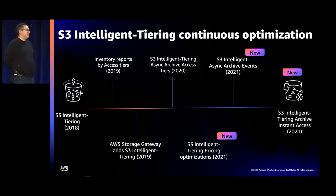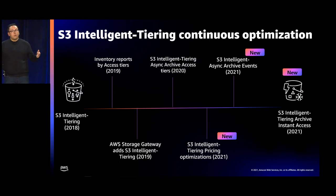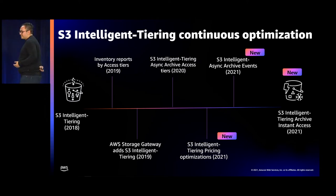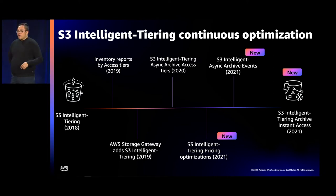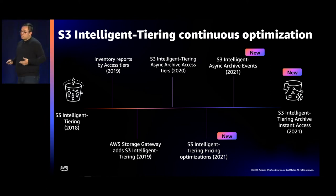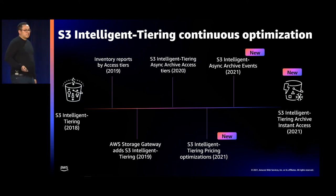To give a few examples: shortly after launching in 2018, we added support for Intelligent Tiering access tiers within inventory reports, so customers could know which objects were sitting in the infrequent access tier for a very long time. We also launched asynchronous archive access tiers because customers told us that if data isn't accessed for a year or longer, they don't need it to be immediately accessible and want it automatically moved to the archive access or deep archive access tier. We launched event notifications for archive events because media and entertainment customers manage databases that need to know which objects are immediately accessible and which are not. And now we're launching the archive instant access tier for customers with petabytes of data that need to be immediately accessible when needed.